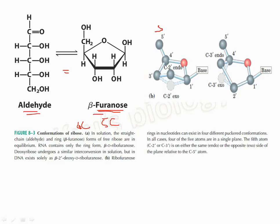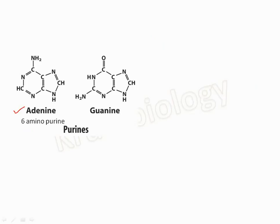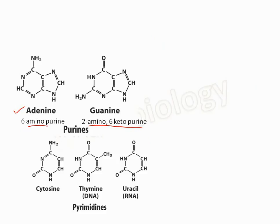In the furanose ring, four atoms are in a single plane and the fifth atom — carbon 2 and carbon 3 — can be on the same side as the plane (endo) or the opposite side (exo) relative to the five-prime carbon. The two common purines are adenine (6-aminopurine) and guanine (2-amino-6-ketopurine). The three pyrimidines are cytosine (2-keto-4-aminopyrimidine), uracil (2,4-diketopyrimidine), and thymine.